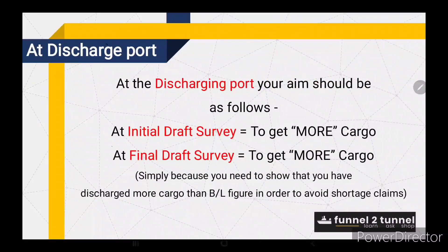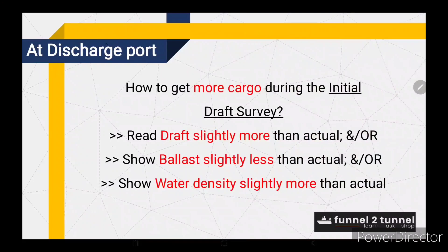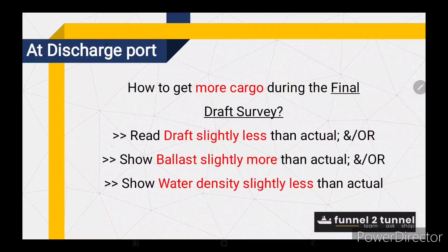At the discharging port, your aim should be as follows. At the initial draft survey, you should aim to get more cargo. At the final draft survey, your aim should also be to get more cargo, simply because you need to show that you have discharged more cargo than the BL figure in order to avoid shortage claims. To get more cargo during the initial draft survey, use any of three methods: read draft slightly more than actual, and/or show ballast slightly less than actual, and/or show water density slightly more than actual. To get more cargo during the final draft survey: read draft slightly less than actual, and/or show ballast slightly more than actual, and/or show water density slightly less than actual.